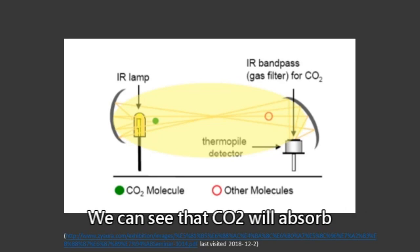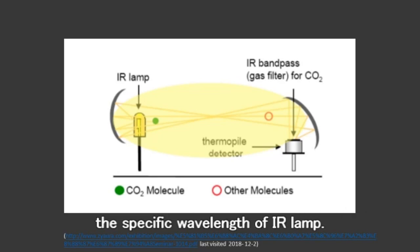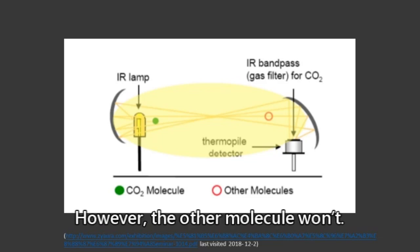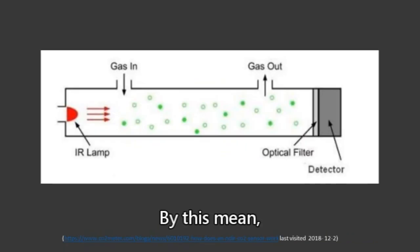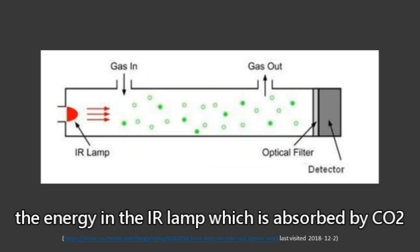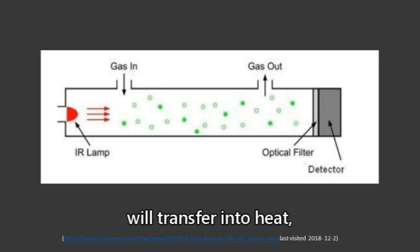We can see that CO2 will absorb the specific wavelength of IR lamp. However, the other molecules won't. By this means, the energy in the IR lamp, which is absorbed by CO2, will transfer into heat.